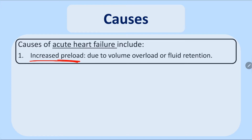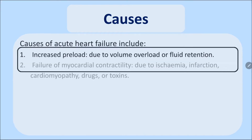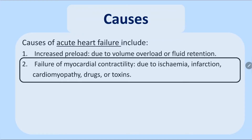Preload is the volume of blood received by the heart, causing stretching of the myocardial muscles to produce contractility and output. When there is an increase in the volume returning to the heart, there is volume overload or fluid retention, which causes acute heart failure. Failure of myocardial contractility — why the myocardium does not contract well — can be due to ischemia or infarction.